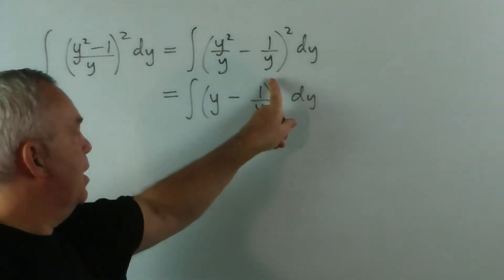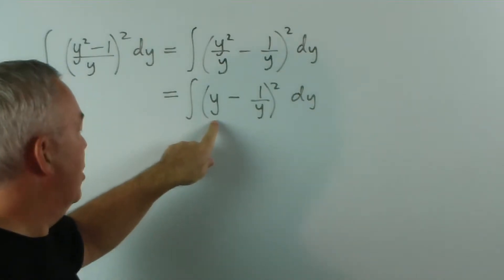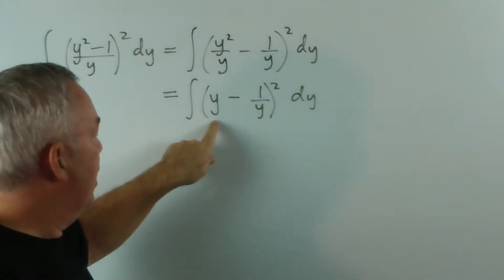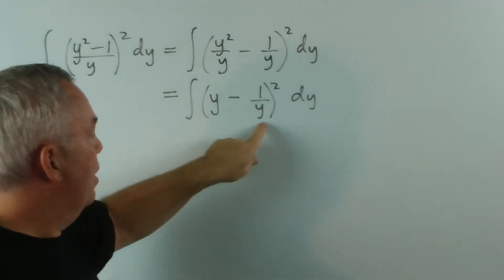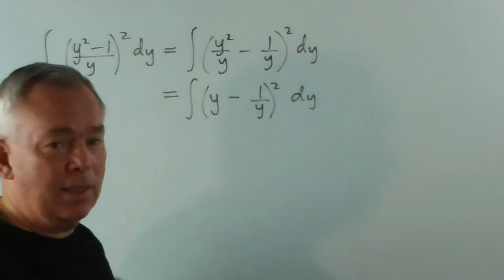Now, if the square wasn't there, this would be quite straightforward. That's your simple polynomial function. And integrating that, you'd get y squared on 2. And this is your logarithmic function, because the derivative of y with respect to y is 1.